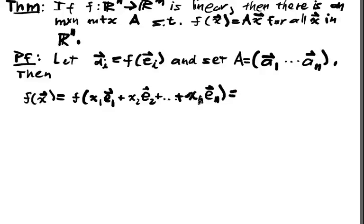And that's going to be equal to, because of linearity I can apply the distributive property over and over again to this thing to get x1 f of e1 plus x2 f of e2 plus all the way up to xn f of en.